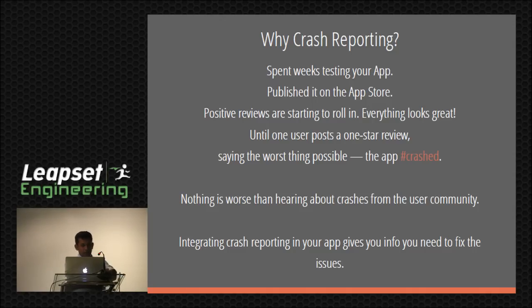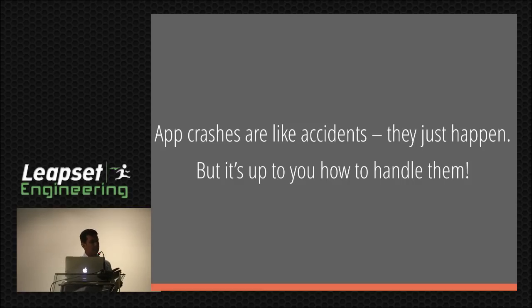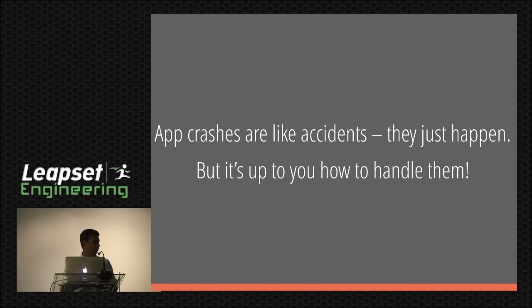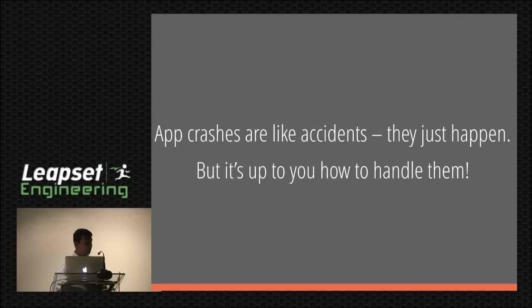The solution: integrating crash reporting in your app gives you information to fix issues — not to prevent them entirely, because app crashes are like accidents; they just happen. But if you have crash reporting, it's all about how you react and how you fix it so that it won't happen again. Think of it like a car — when you buy a new car, one day the bumper is going to get scratched. You still drive it and take the risk. However, you have a mechanism to cover you if something goes wrong: an insurance policy. Crash reporting is similar — when something goes wrong, you get notified and you can fix it so it won't happen again.